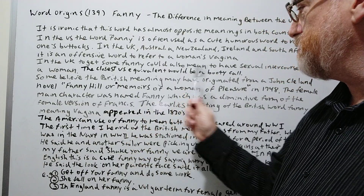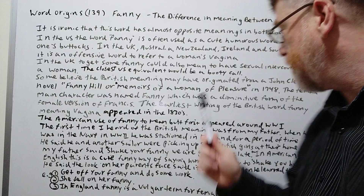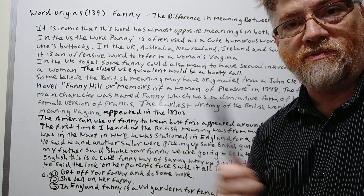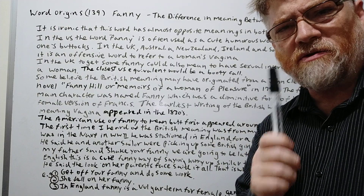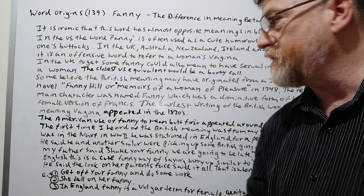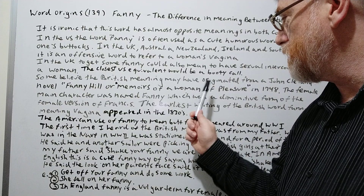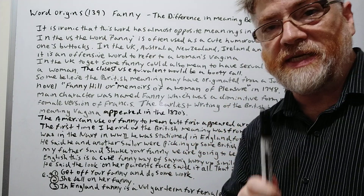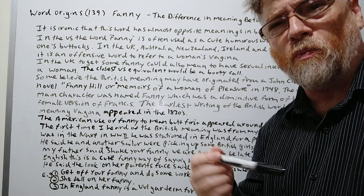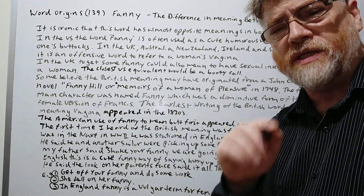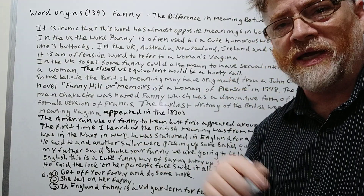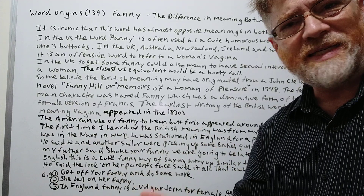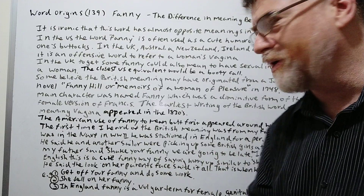Some believe the British meaning may have originated from a John Cleland novel called either 'Fanny Hill' — which is the character's name — or 'Memoirs of a Woman of Pleasure,' published in 1748. Memoirs are when somebody writes about their life story, and she probably talked about her sexual encounters in this book.